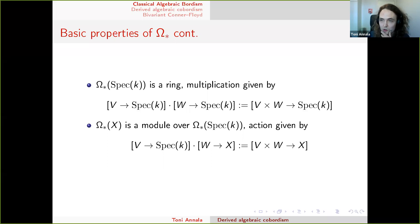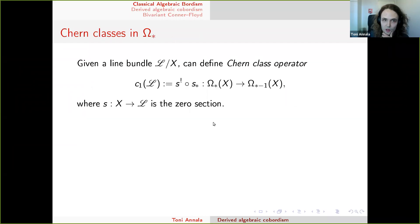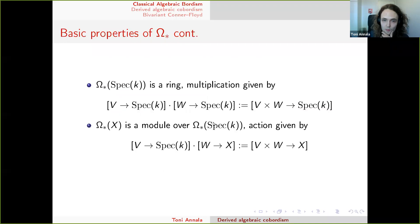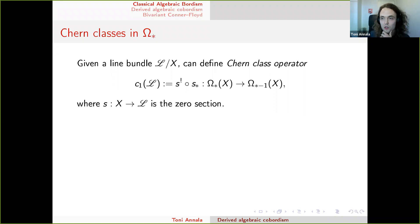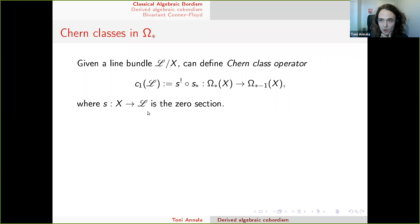For all X, the algebraic bordism of X is a module over this ring of the point. The module action is defined by taking products. For the basic properties, we need to recall the theory of Chern classes in algebraic bordism. Every time we have a line bundle L over X, we define the Chern operator using the zero section.